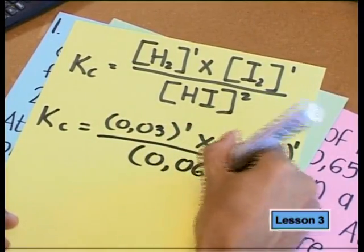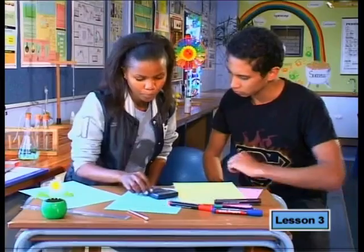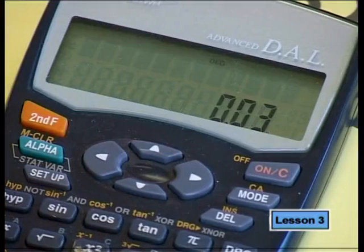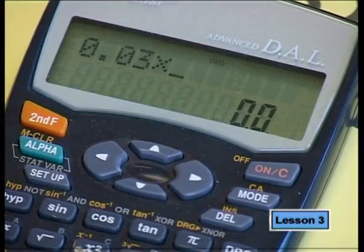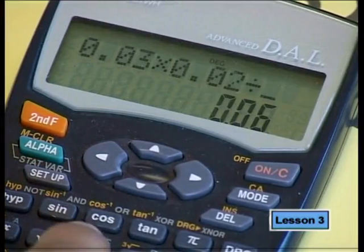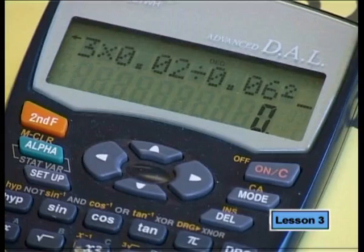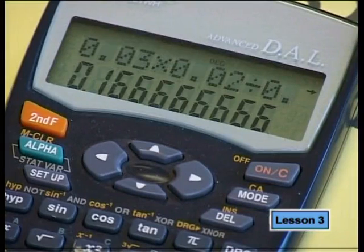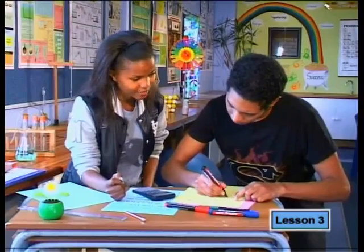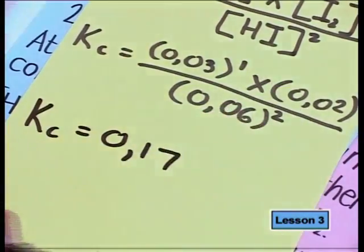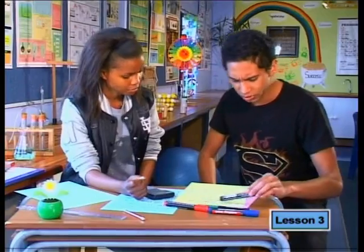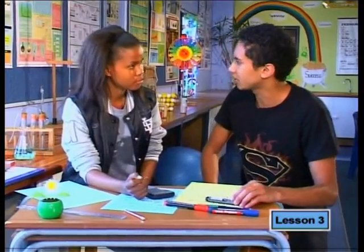Let's work it out: 0.03 times 0.02 divided by 0.06 squared. The answer rounded off is 0.17. There are no units for Kc because the units of concentration cancel each other out. That's one down, two more to go.